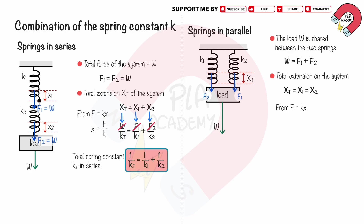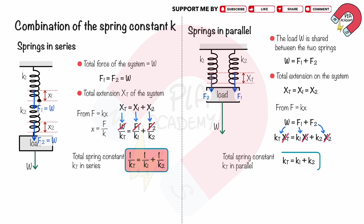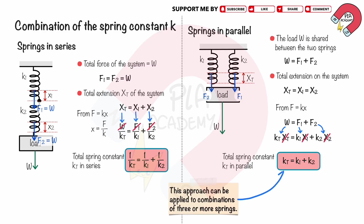From Hooke's law F equals KX, substituting W equals KT·XT, F1 equals K1·X1, and F2 equals K2·X2. We can cancel out XT and X1 because they are equal. Therefore, the total spring constant KT equals K1 plus K2. This approach can be applied to combinations of three or more springs.